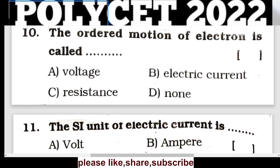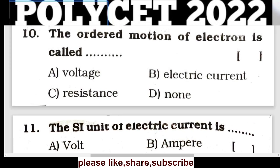Question 10: The ordered motion of electrons is called electric current. Option B is the correct answer.